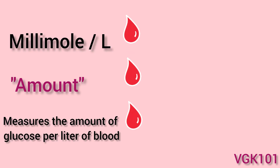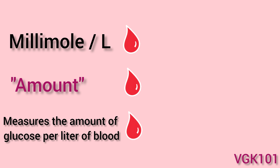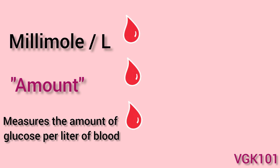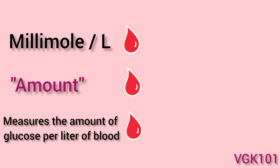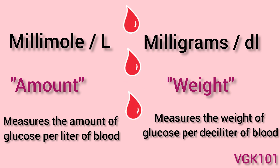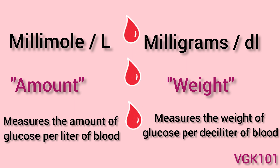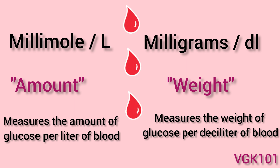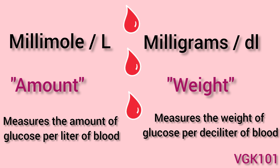A millimole is a unit of measure that refers to the amount of a substance — in this case, it measures the amount of glucose in a liter of blood. A milligram is a unit of mass, and a deciliter is one-tenth of a liter. This unit measures the mass of glucose in a deciliter of blood.